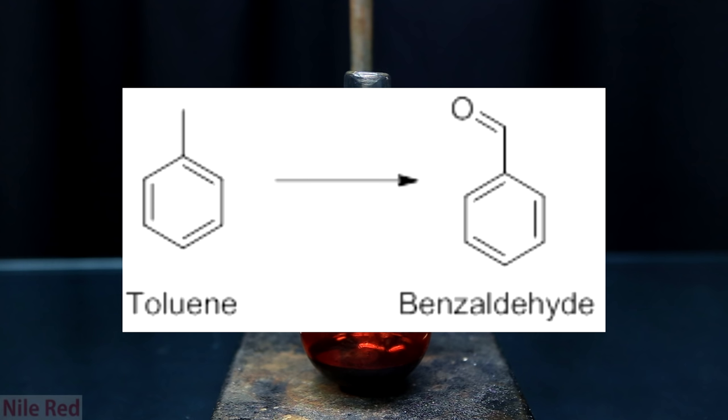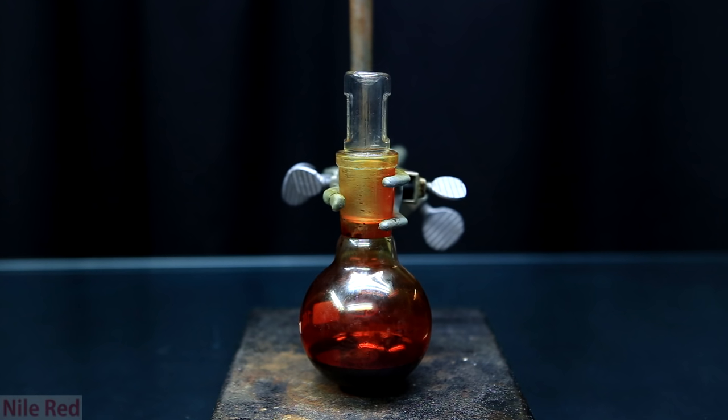Toluene is a solvent for paint thinners, but when it's oxidized to benzaldehyde, that's actually the artificial flavoring that's used for almond flavor. Anyway, all that business is for a later video, so let's get started on what's needed to carry this out.